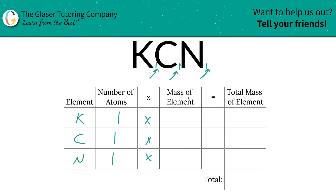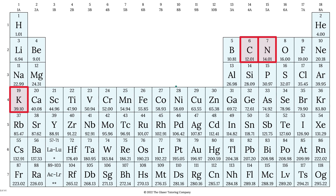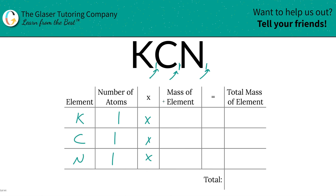Easy peasy. Now we're going to multiply by the mass of each element. Where are these masses found? You guessed it — periodic table. Mass of potassium is 39.1, carbon is 12.01, nitrogen is 14.01. So we're going to write them on in: 39.10 for potassium, carbon was 12.01, and nitrogen was 14.01.